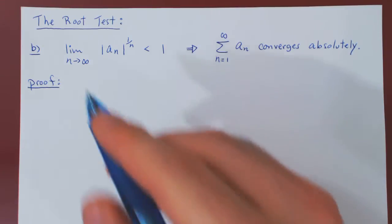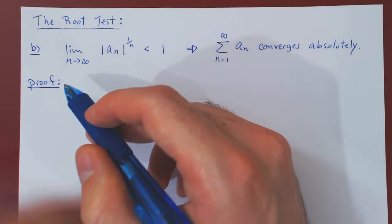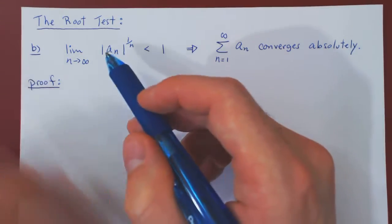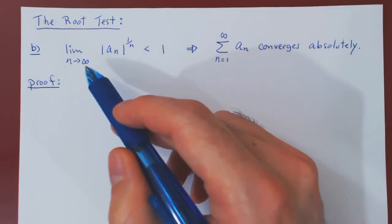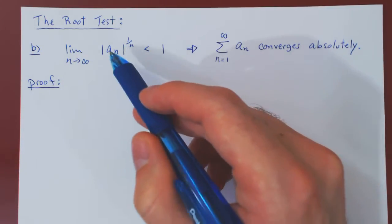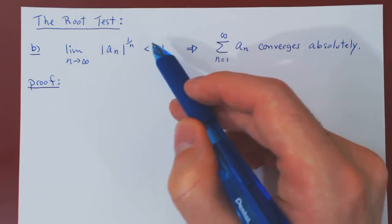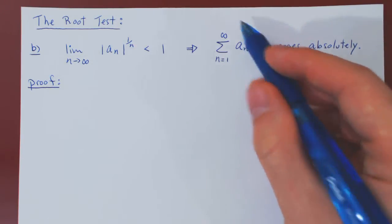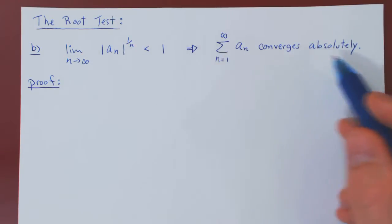Okay, so in this video we will prove part B of the root test. If you recall, part B states that if the limit as n tends to infinity of the nth root of |a_n| is strictly less than 1, then the corresponding series converges absolutely.